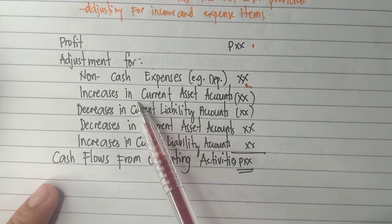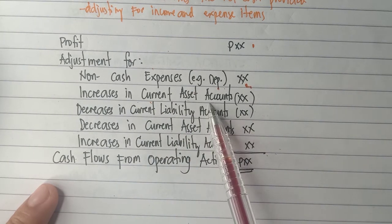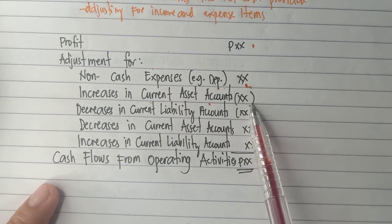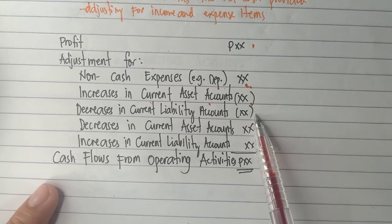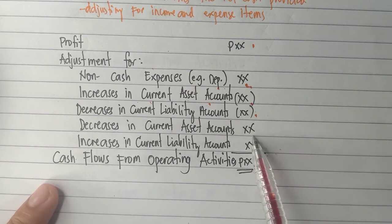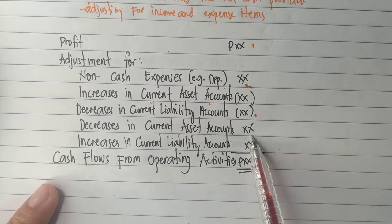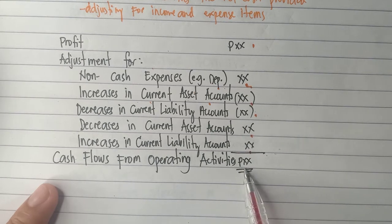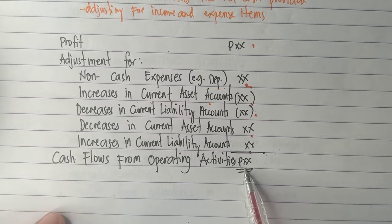Then we have to account for changes in current accounts. Increases in current asset accounts — subtract. Decreases in current liability accounts — subtract. Decreases in current assets and increases in current liability accounts — addition. The result of these adjustments gives you the cash flows from operating activities.